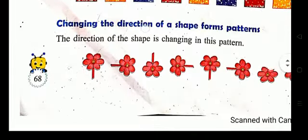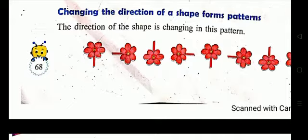Next, changing the direction of a shape forms a pattern. Direction can be clockwise or anticlockwise — clockwise means like a clock is moving, anticlockwise means the opposite side. You can see a flower: first straight, then rightward, then downward, then leftward, then again straight, rightward, downward, leftward. So like this, changing direction also forms a pattern.